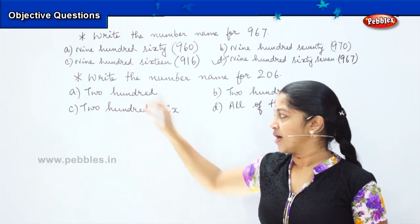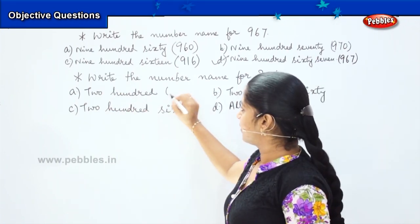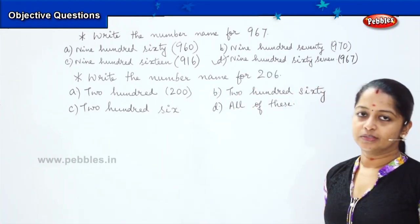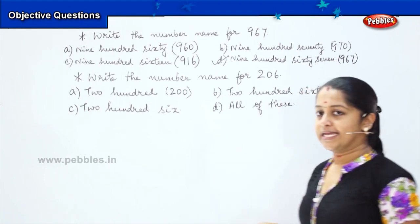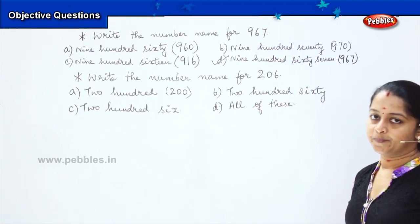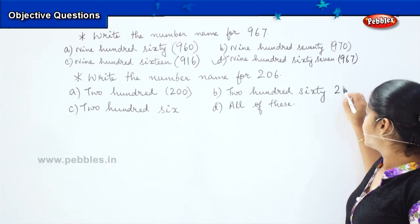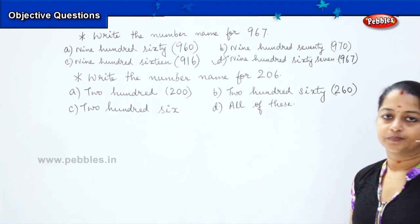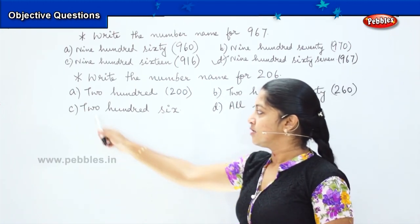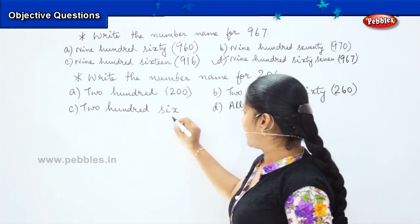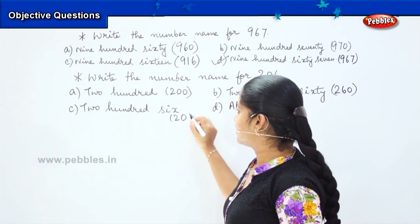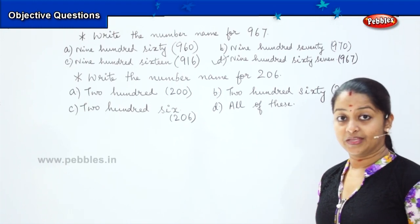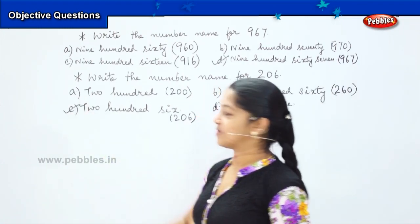Coming to the first option, it says 200. How will you write 200? It's 2-0-0. Is it matching with the question? No. The second option says 260. How will you write it? 2-6-0, which is again not tallying with the question. The third option says 206. How will you write it? 206. Is option C matching with the question? Yes. So my right answer is option C.